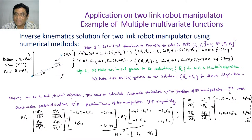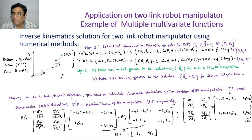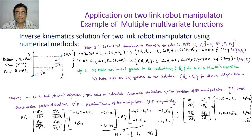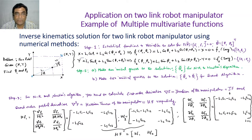This function F1 is a function of theta one and theta two. Similarly, there is another function F2 of theta one and theta two. For the Y direction, projecting gives L1 sin(theta1) plus L2 sin(theta1 + theta2) — simple high-school math. So F2 equals L1 sin(theta1) plus L2 sin(theta1 + theta2) minus Y, taking minus Y because I need to find the roots where F1 and F2 equal zero. This step one applies whether it is a two-link, three-link, six-link, or seven-link humanoid robot manipulator.